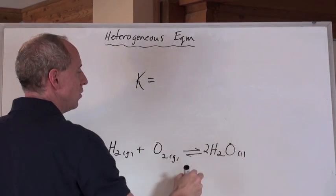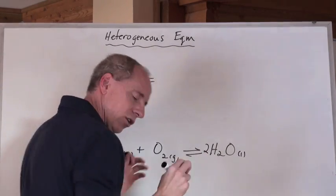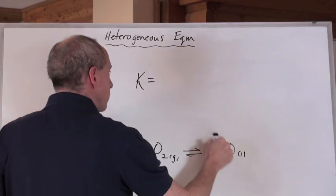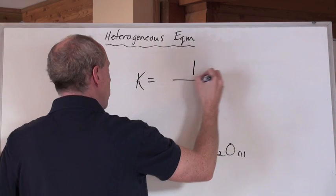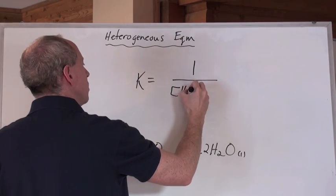If somebody said K equals what for this, you'd go, well, that's a liquid, so I'm not going to put that in the expression. So if that's a product, it goes in the numerator and is one over, and then it's the concentration of the H2.